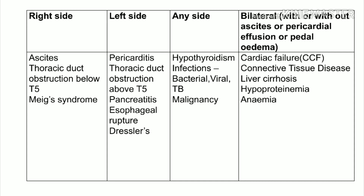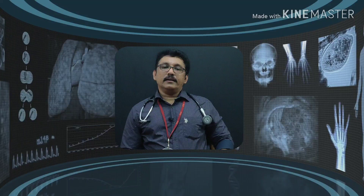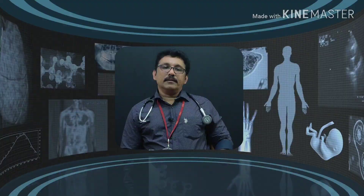Infectious causes — bacterial, viral, fungal, TB — and malignancy can produce effusion on any side. Bilateral pleural effusion is commonly seen in cardiac failure, liver cirrhosis, hypoproteinemia, anemia, and connective tissue disorders. When bilateral pleural effusion occurs alongside pericardial effusion and ascites, this is called polycirrhositis, classically seen in connective tissue disorders.